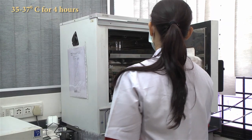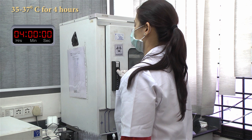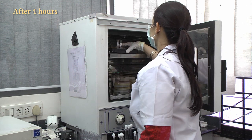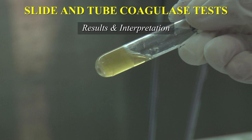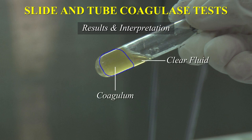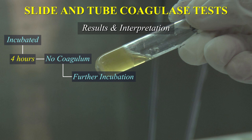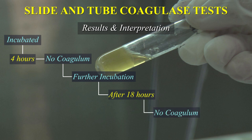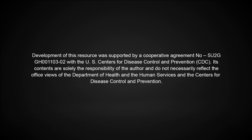Incubate the test tubes at 35 to 37 degrees centigrade for 4 hours. Examine the tube after 4 hours. A positive tube coagulase test is indicated by the formation of a stable clot or coagulum which is easily visible by slightly tilting the tube. If a test is negative after 4 hours, it should be further incubated at room temperature and observed again after 18 hours. If still the tube shows no coagulum, the test strain can be safely reported as coagulase negative.